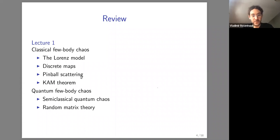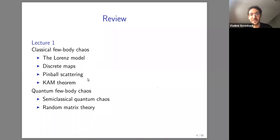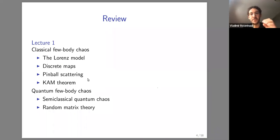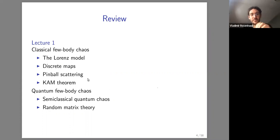We discussed some simple discrete maps such as the tent map, which nicely illustrate stretching and folding — the hallmarks of chaos. We then moved on to a more physical example of pinball scattering: one has three disks and sends in a particle, looking at the angle at which it leaves, which is highly erratic and very sensitive to the impact parameter. There exist impact parameters which cause the ball to spend an extremely long time bouncing between the three disks, and the number of different trajectories grows exponentially with the number of disks hit.